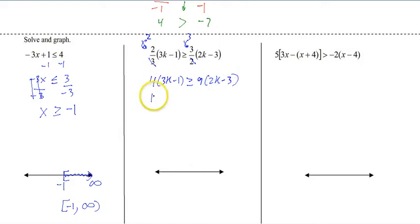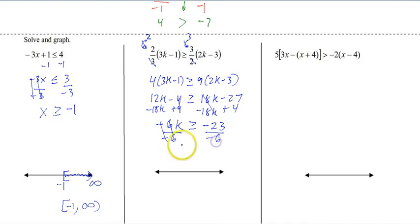And then we can distribute. And there it is simplified. So now we need to put a K on one side or the other. I'm going to put it on the left. Add the 4. And then divide by negative 6. And again, since we divided by a negative, we must flip the inequality.